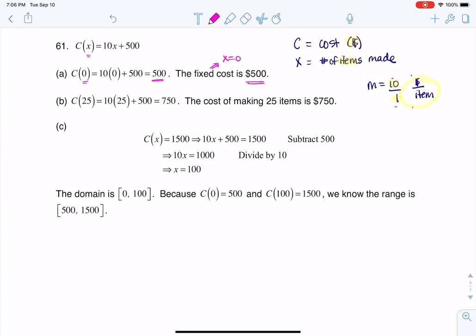And for part B, they say, what's the cost of making 25 items? Well, 25 items, if you look at that, that is an x value. So you see my work here, and this time, instead of putting zero in for my x value, I put 25 in. I got 750 back out. The units on that are dollars. And that's why you see that solution there saying the cost of making 25 items is $750.